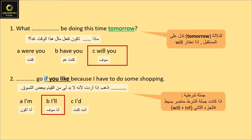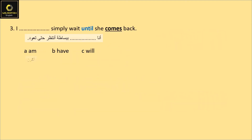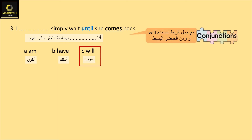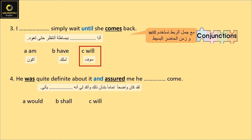Question 2. 'I'll go if you like, because I have to do some shopping.' This is an 'if' sentence — when the first part is simple present, the second part uses 'will + infinitive'. Another example: 'I will simply wait until she comes back' — the 'until' clause is simple present, the main clause is 'will + infinitive'.